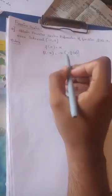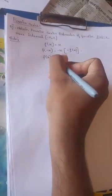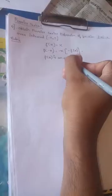Let's consider f(minus x) and substitute the value minus x, which gives minus x, equal to minus f(x). Whenever f(minus x) is equal to minus f(x), we say that f(x) is an odd function.